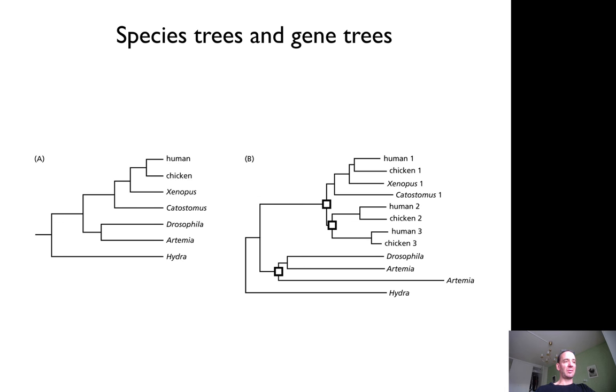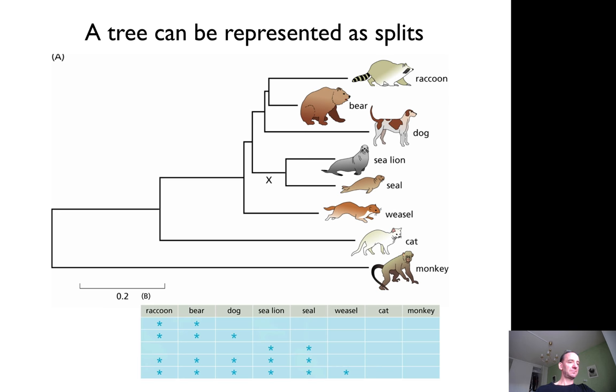So if you only had the human 1 gene and the chicken 2 gene—if the chicken 1 gene was missing from your dataset—you would think that Xenopus was more similar to human than to chicken. But in principle, you want to have these genes completely represented as splits.